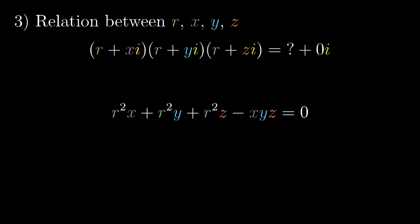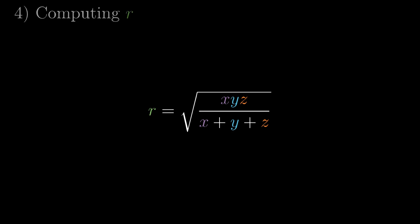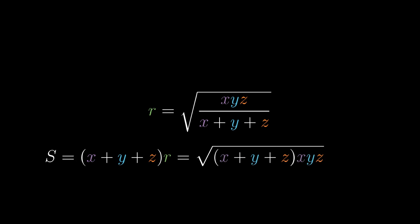Complex numbers have done their job. We will not need them anymore. The rest is just a routine calculation. We want to express r, so we put constants to the other side. Factor out r squared. Divide by the coefficient near r squared. And take the square root. To calculate the area, we just multiply r by the sum x plus y plus z. And this is Heron's formula.